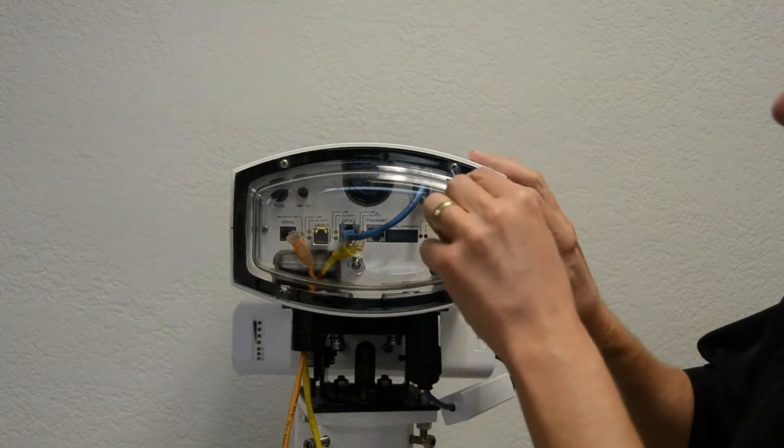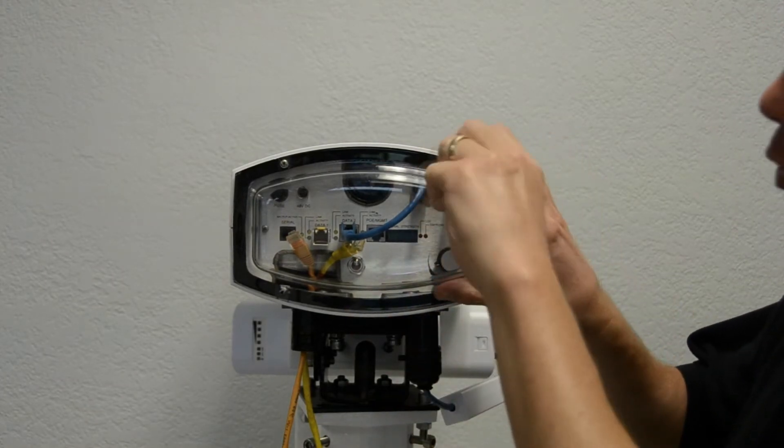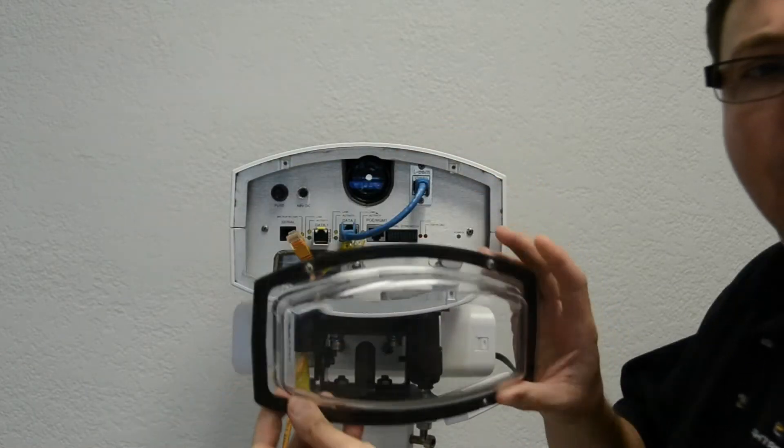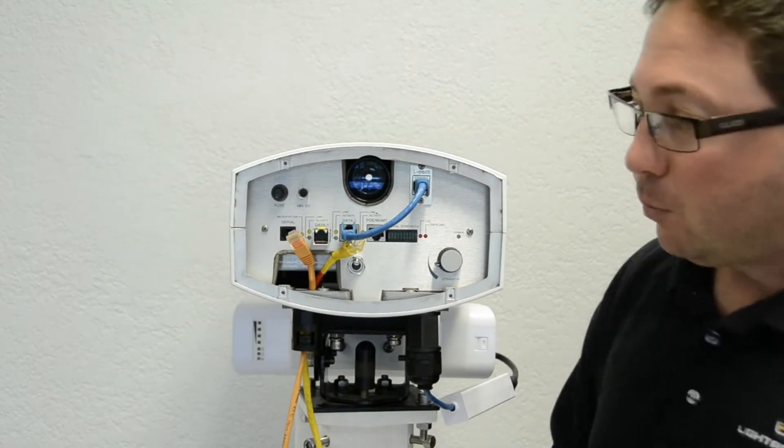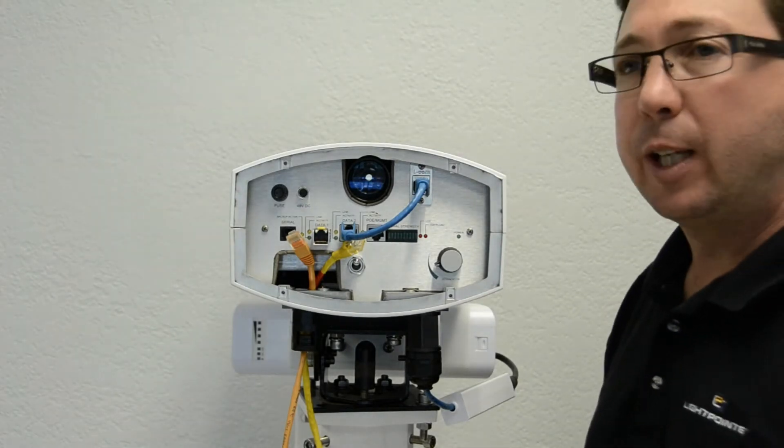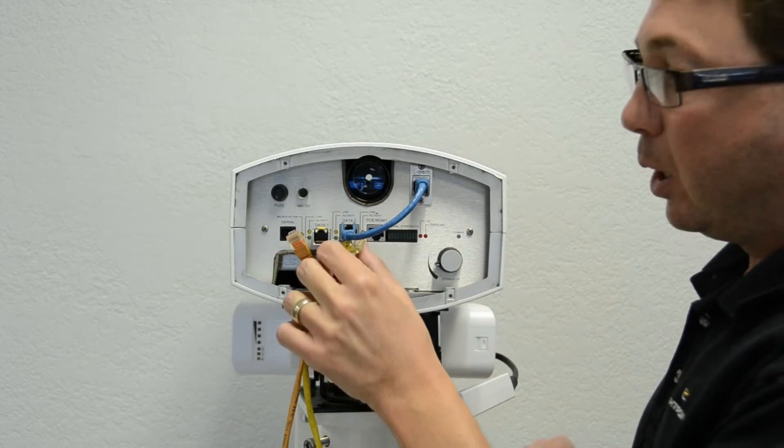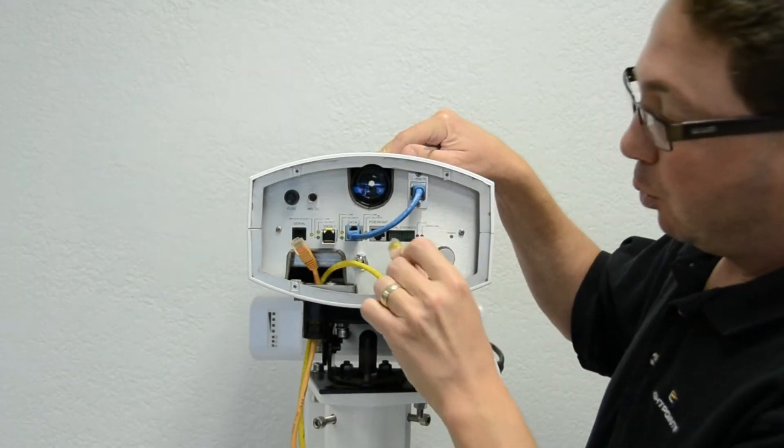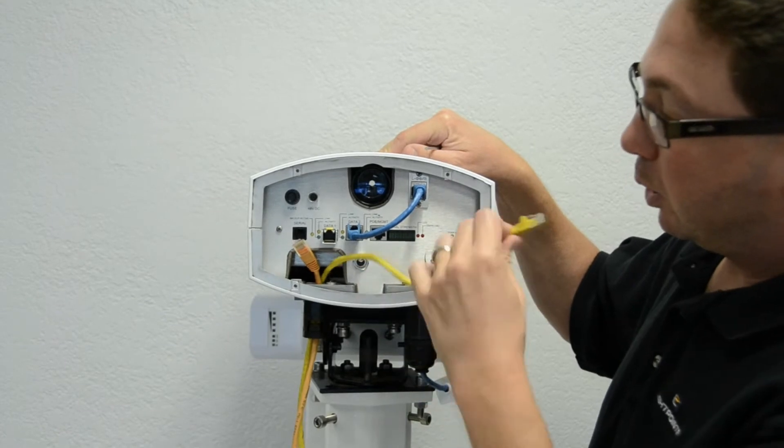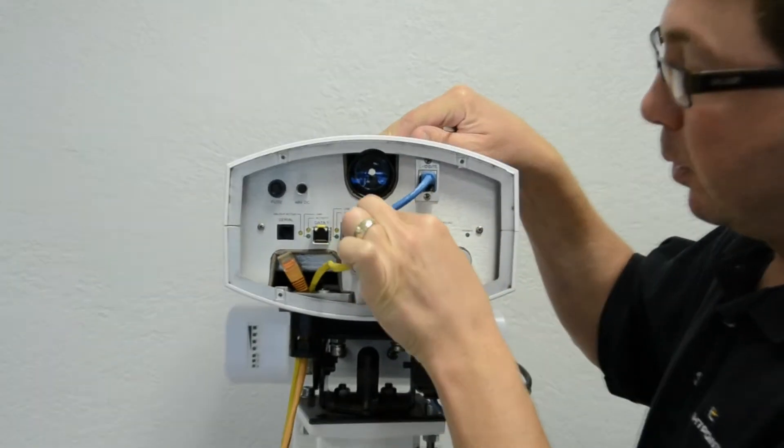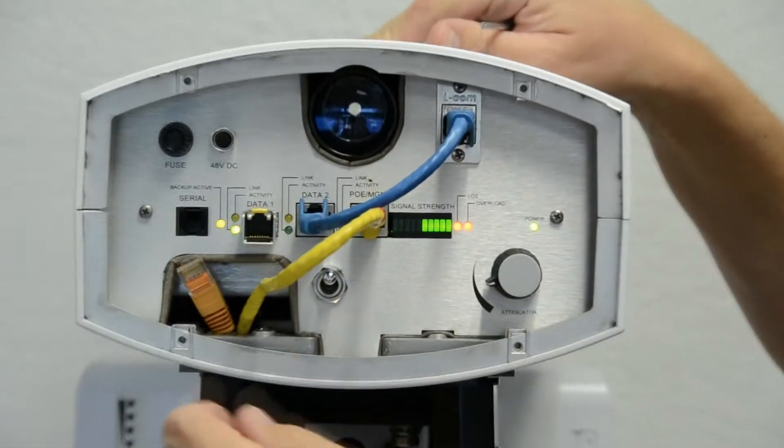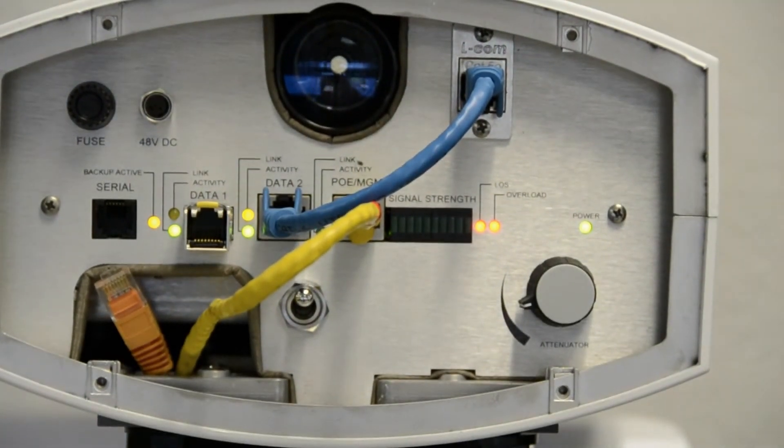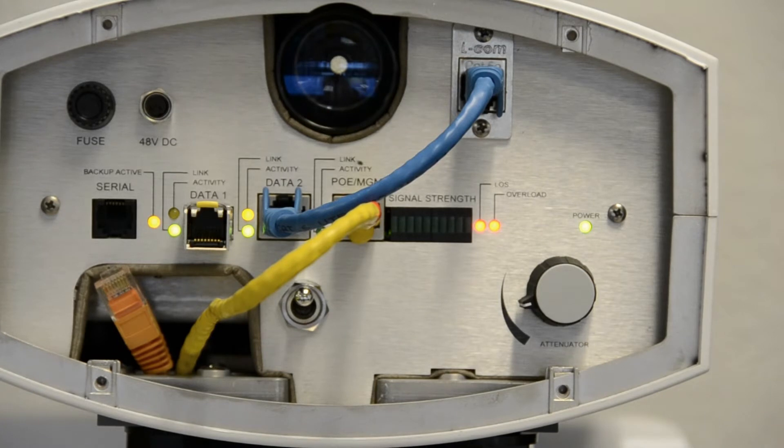So with this product, you need to take the rear off, and it does require, just like the AirLite G, two cables. We have a PoE cable which plugs into the PoE management port. You'll also notice all the lights come on. If you can see down here, you'll also see that the radio LED is illuminated.